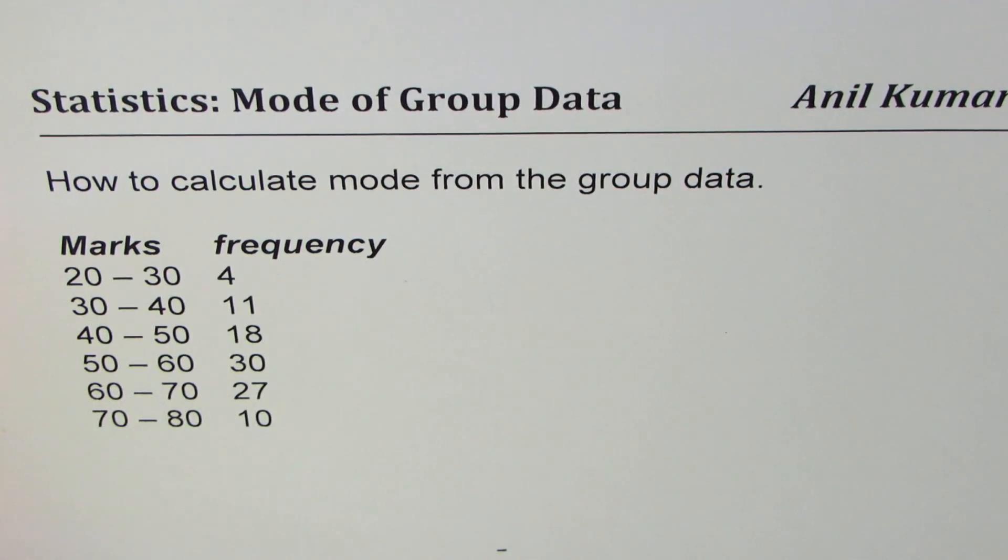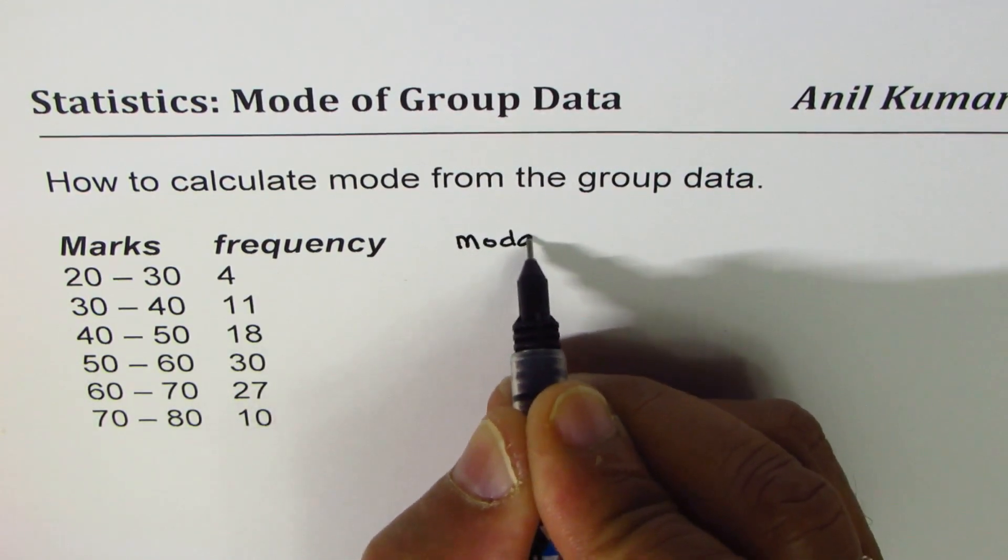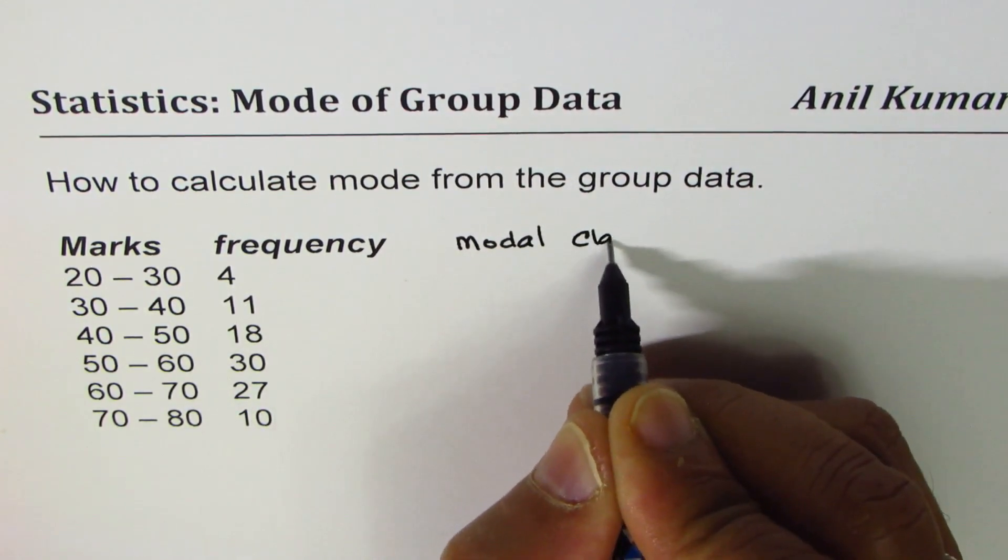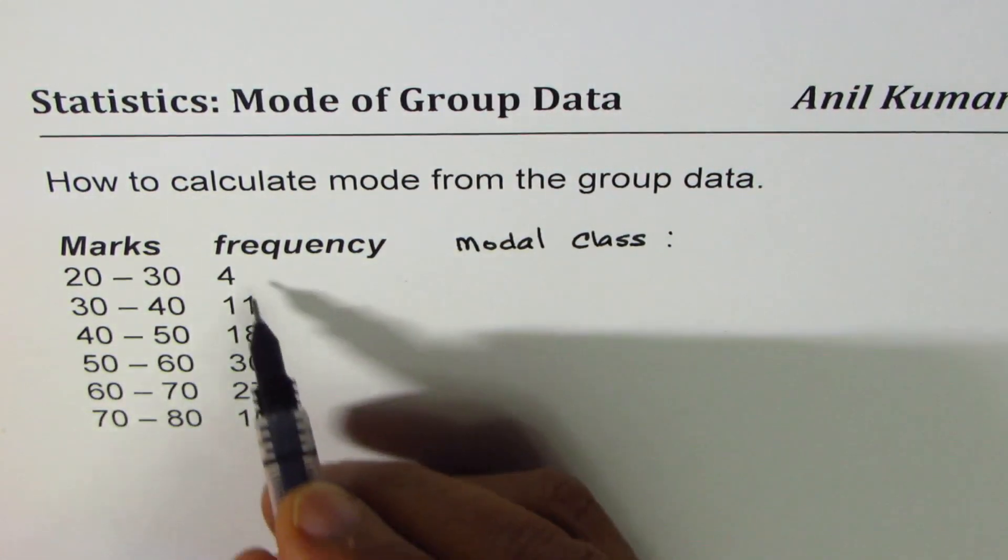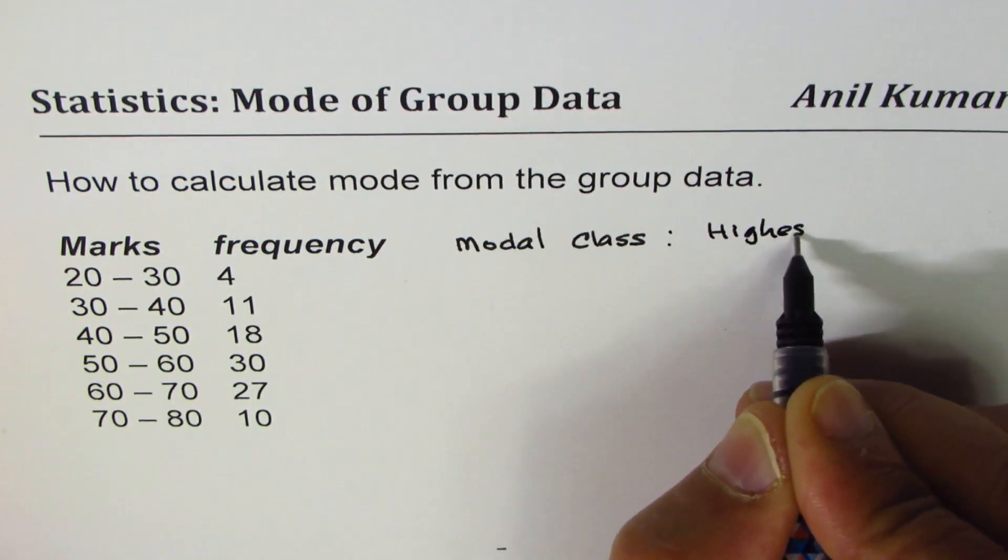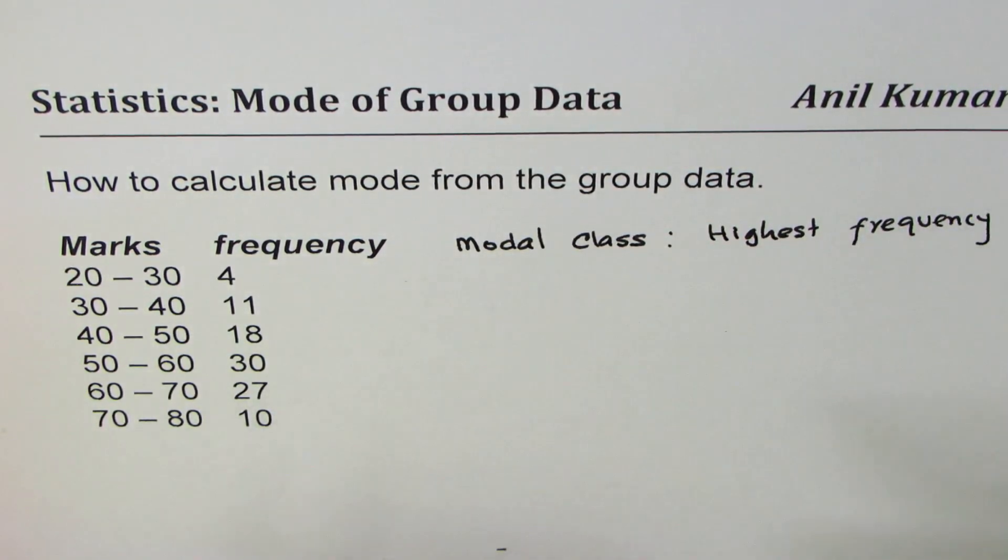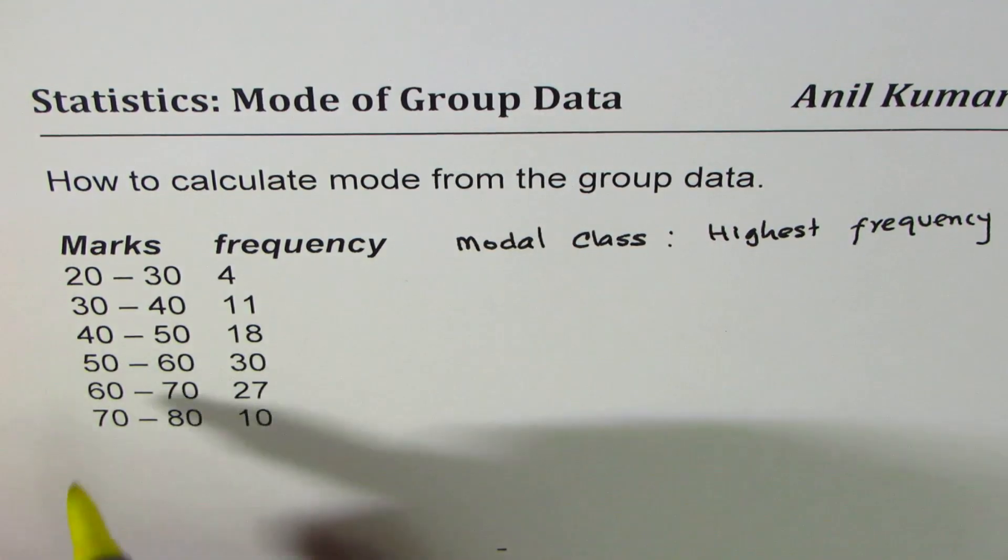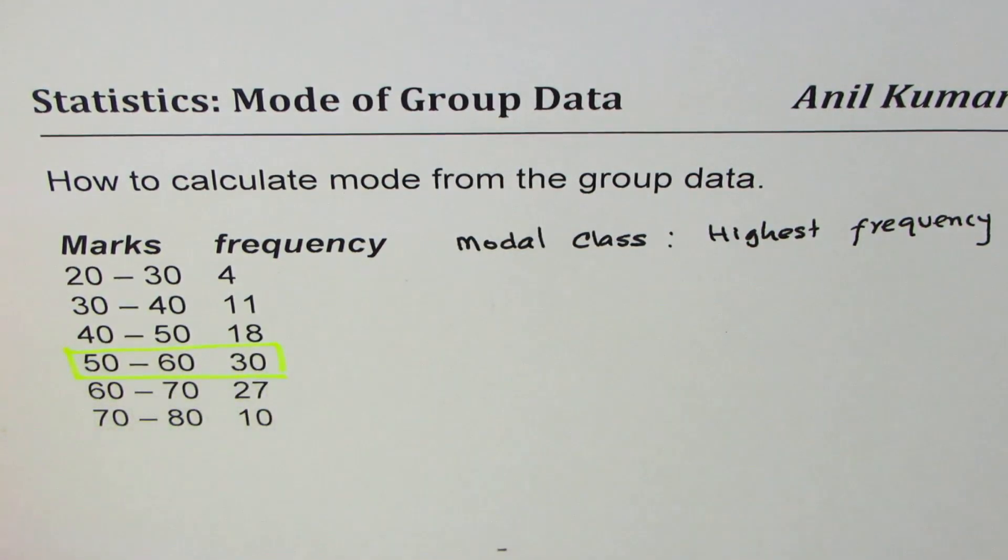Mode, as you know, is most frequent. When we are dealing with grouped data, we actually first try to find what is the modal class. Modal class is the class where we have highest frequency. In our case, 30 is highest in the frequency, so the modal class is 50 to 60.